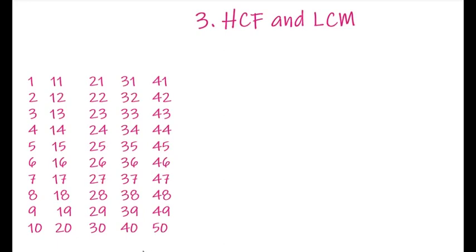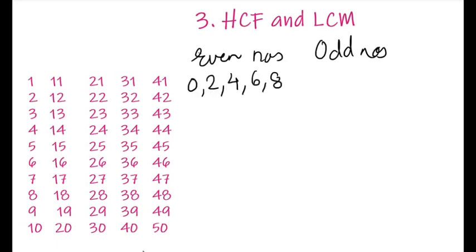In the earlier classes we have learnt about even numbers and odd numbers. What are even numbers? If you see 0, 2, 4, 6, or 8 at the units place, then all such numbers are called as even numbers. Now what are odd numbers?